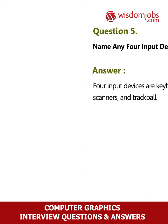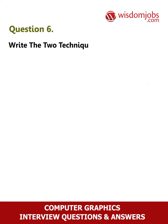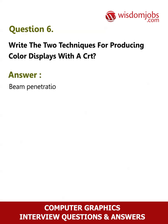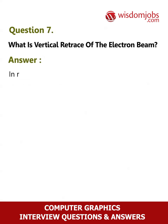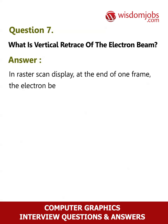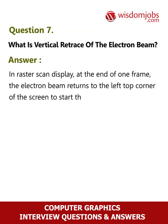Question 6: Write the two techniques for producing color displays with a CRT. Answer: Beam penetration method and shadow mask method. Question 7: What is vertical retrace of the electron beam? Answer: In raster scan display, at the end of one frame, the electron beam returns to the left top corner of the screen to start the next frame.